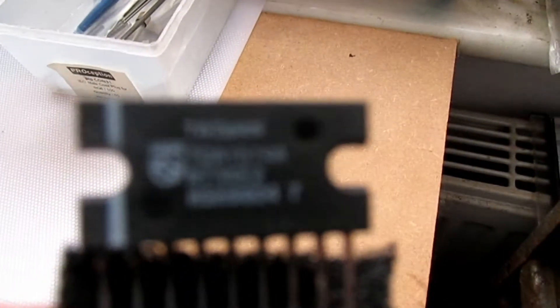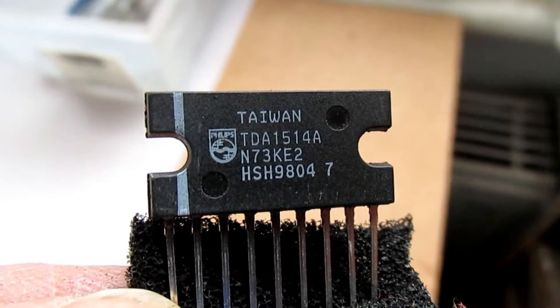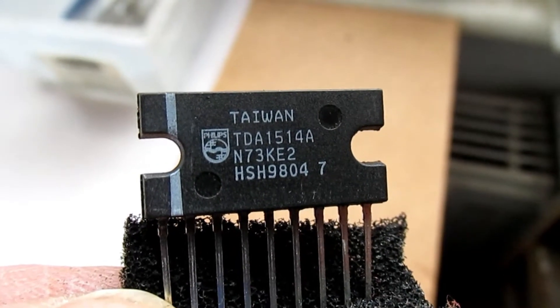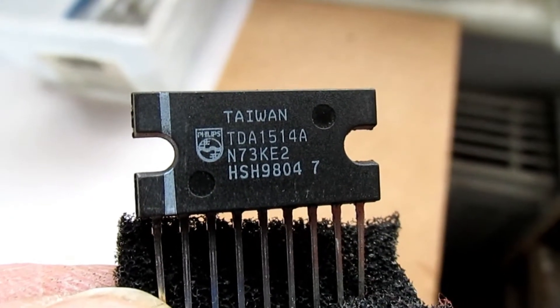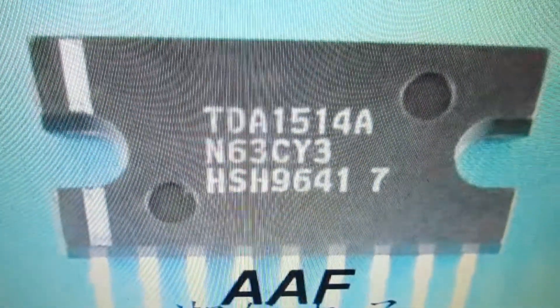That's the one on eBay from a Chinese seller. That is what a genuine looks like - it's got the Philips logo, it says Taiwan, and the white stripe is in a completely different place. Clearly a fake.